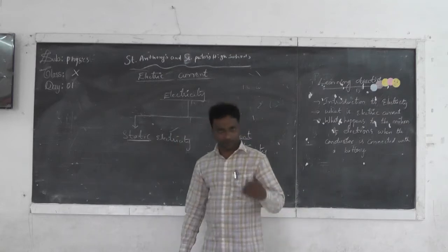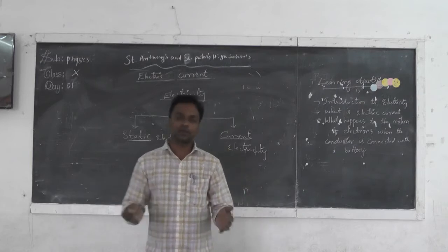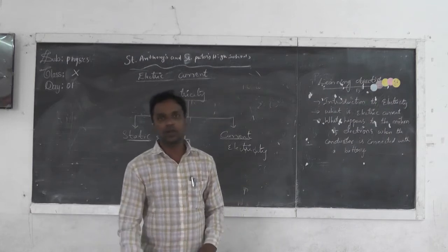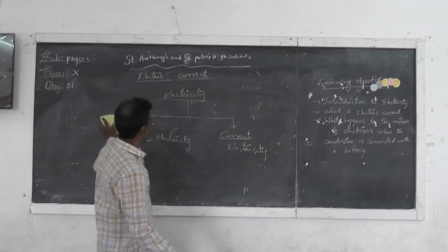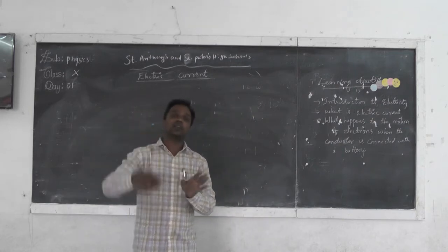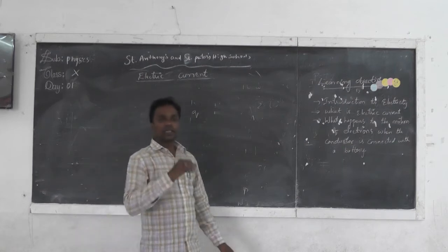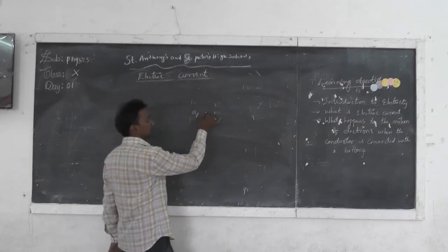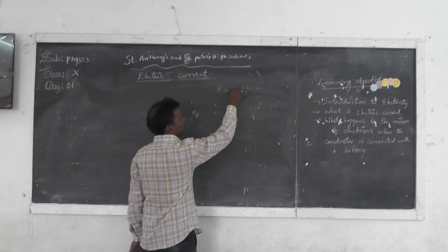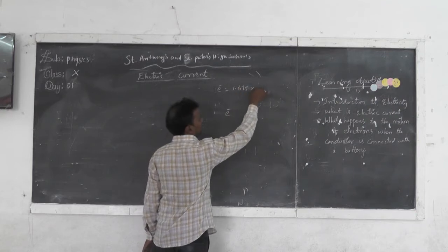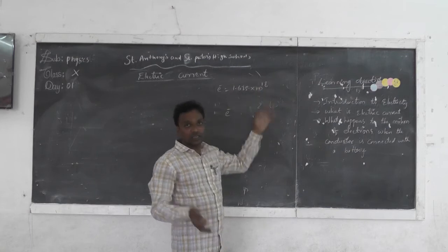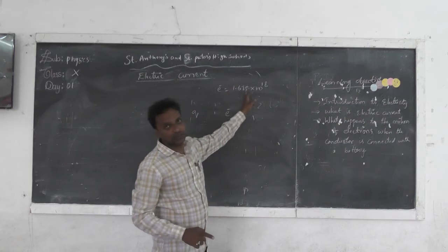In static electricity, we have dealt with primary cells and various types of cells studied at rest in previous classes. Now we are going to learn about electric current. When charges — that means electrons — move from one place to another, the charge of an electron is denoted by Q. The charge of one electron is given as 1.625 × 10⁻¹⁸. These many electrons together constitute one coulomb of charge. If there are N electrons, the charge Q equals N times e — that is, Q = Ne.